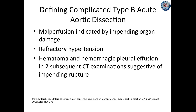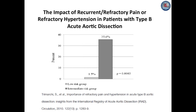While no uniform criteria exist to differentiate complicated versus uncomplicated type B acute dissection, a recent interdisciplinary consensus document has suggested the following definition of complicated type B acute aortic dissection: malperfusion indicated by impending organ failure; hypertension when associated with malperfusion or persisting at high levels despite full medical therapy; or increases in periaortic hematoma and hemorrhagic pleural effusion on two subsequent CT examinations suggestive of impending rupture. In IRAD, refractory or recurrent pain or refractory hypertension have been noted to be predictors of mortality, increasing the risk of in-hospital mortality after medical management — 35.6% in the intermediate risk group versus 1.5% in the low risk group without any clinical complications.